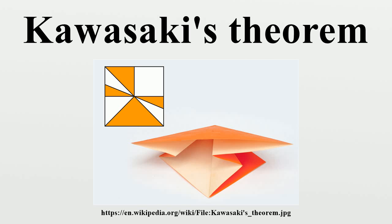Byrne and Hayes showed that the problem of testing global flat foldability is NP-complete. Proof: To show that Kawasaki's condition necessarily holds for any flat folded figure, it suffices to observe that at each fold, the orientation of the paper is reversed. Thus, if the first crease in the flat folded figure is placed in the plane parallel to the x-axis, the next crease must be rotated from there by an angle of α1, the crease after that by an angle of α1 − α2, etc. In order for the paper to meet back up with itself at the final angle, Kawasaki's condition must be met.